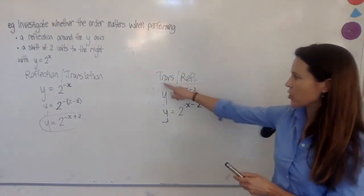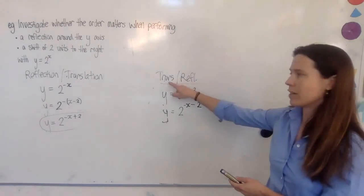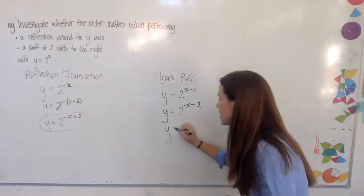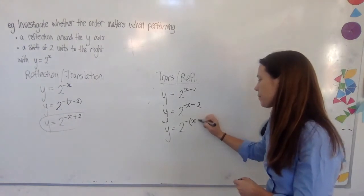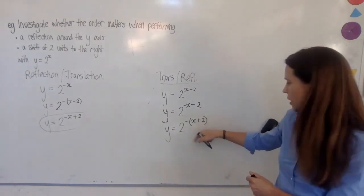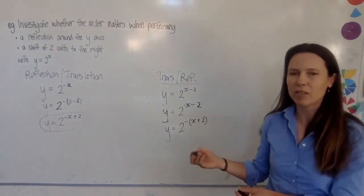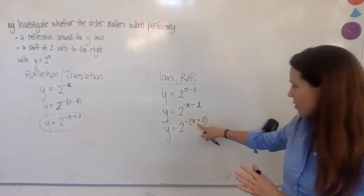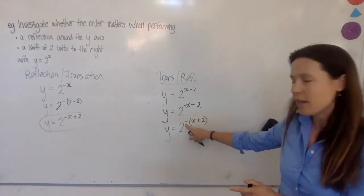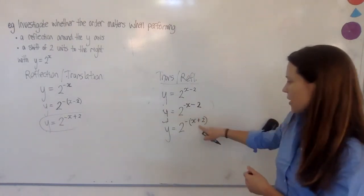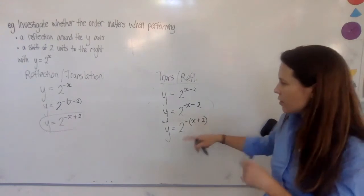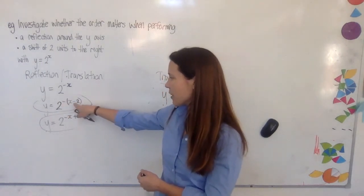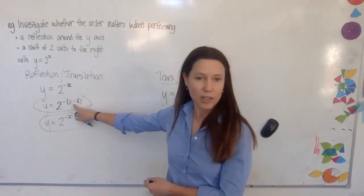This version — where we did the translation and then the reflection — actually didn't end up translating two units to the right; it ended up to the left. To understand that, we need to write the formula in bracketed form, because the brackets show us what has happened: the reflection is indicated by the negative, and from that we can see whether the graph has a translation to the left or to the right. The properly ordered version shows a translation to the right, while the other shows a translation to the left.